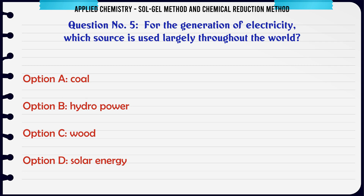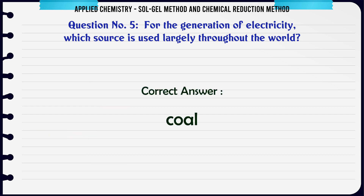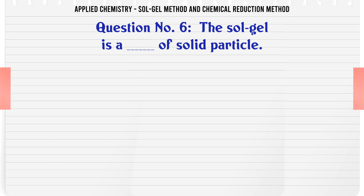For the generation of electricity, which source is used largely throughout the world? A. Coal, B. Hydropower, C. Wood, D. Solar energy. The correct answer is Coal.